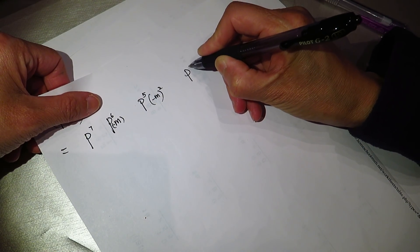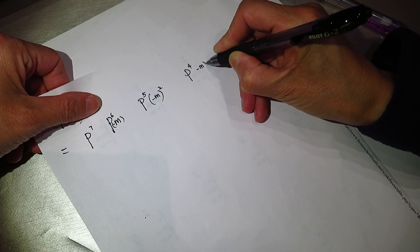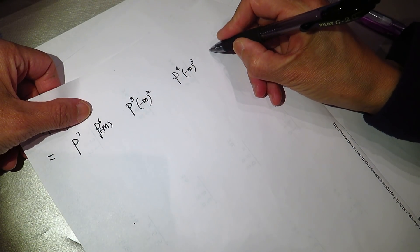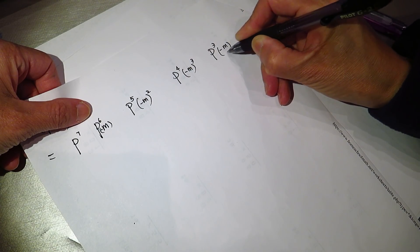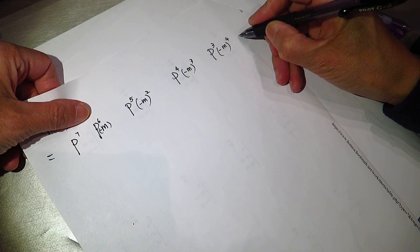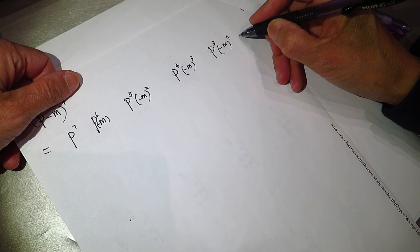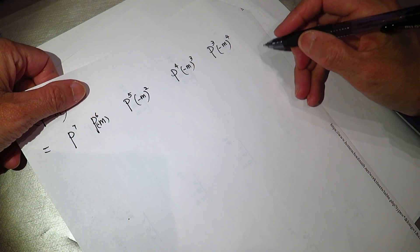P^7, negative M, P^3, negative M^4. Uh-oh, I should write it a bit, I will write it this way.